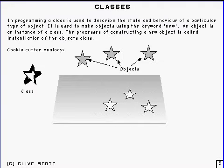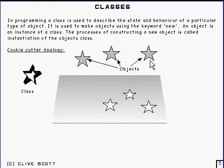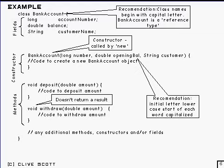This is all about classes. You've got a class somewhere in memory, and every time you do a new, you get a new object created. This is the sort of cookie-cutter analogy.